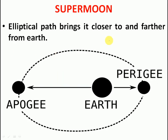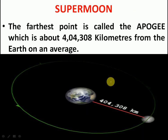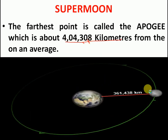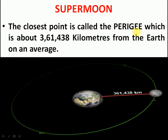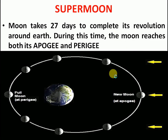The elliptical path brings the moon closer to and farther from the Earth. The apogee — the farthest point — is approximately 443,000 km from the Earth on average, while the perigee — the closest point — is about 361,438 km from the Earth on average. The moon takes 27 days to complete its orbit, during which it reaches both its apogee and perigee.